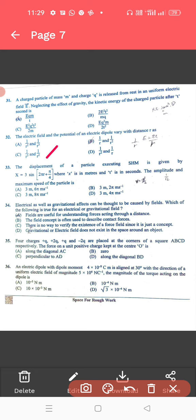For 33, the displacement of a particle. For 33, the correct answer is 3 meter, 6 pi meter per second. Okay. Then, 34, the correct answer is fields are useful. Fields are useful, that is, A.